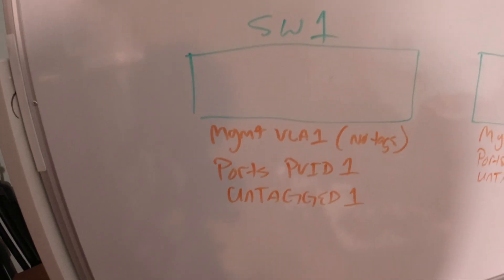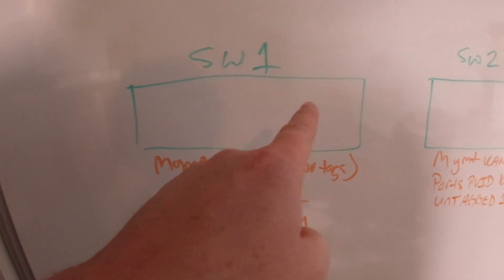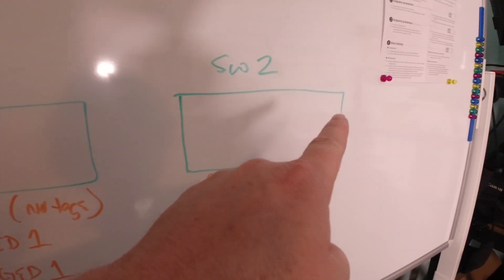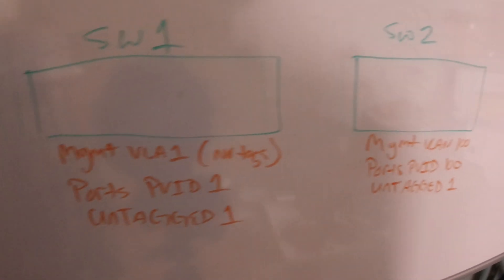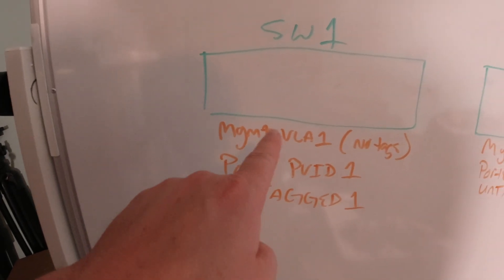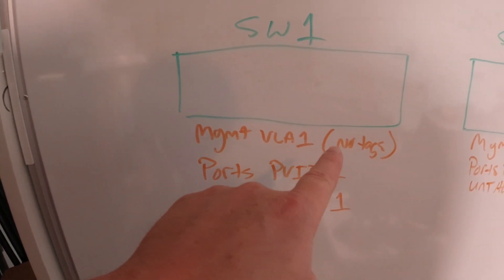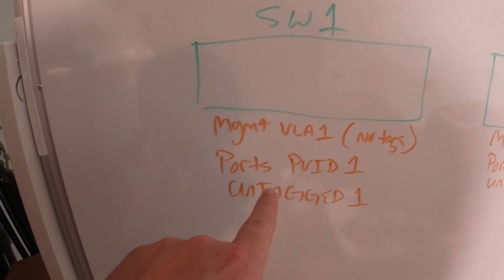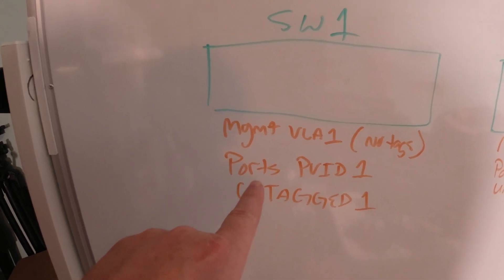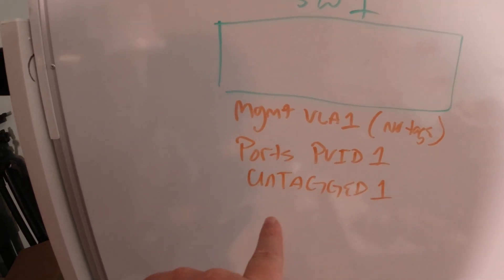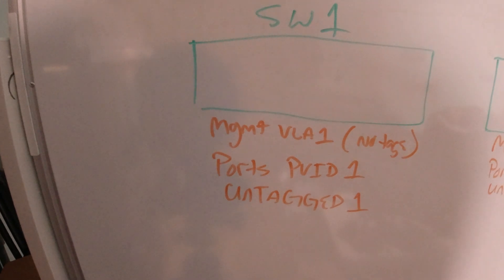Let's talk about a little bit of network design, and that is tagged versus untagged VLAN. Let's head on over to the dry erase board. So here we have two switches — switch one and switch two. Switch one has a management VLAN of VLAN one, not tagged. All the ports are PVID one and all untagged VLAN one.